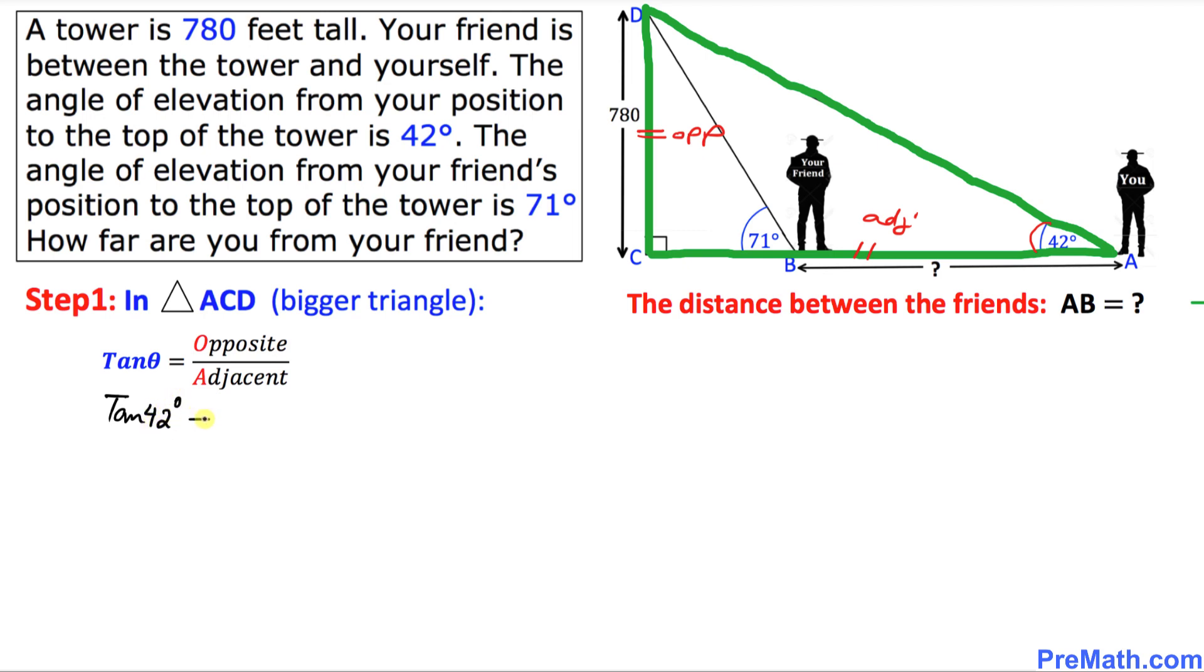42 degrees equal to opposite side is 780 divided by adjacent. In our case adjacent is unknown, so I'm going to just put down divided by AC. And we know that the tangent of 42 degrees is 0.9.